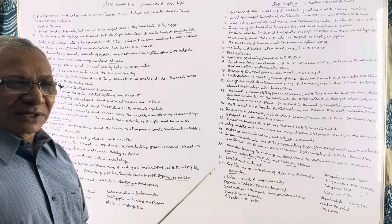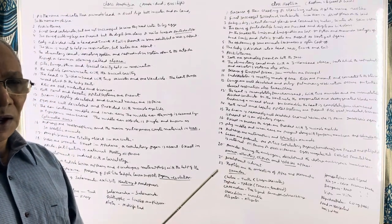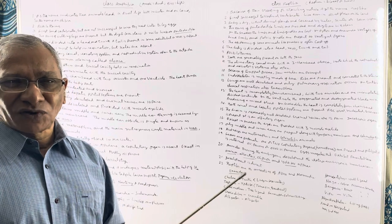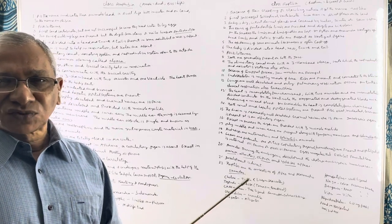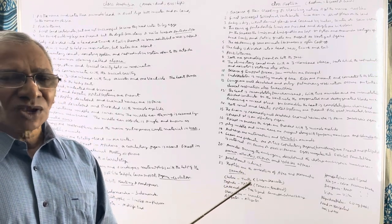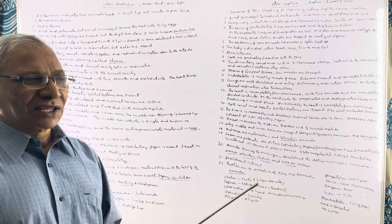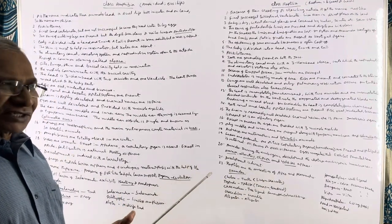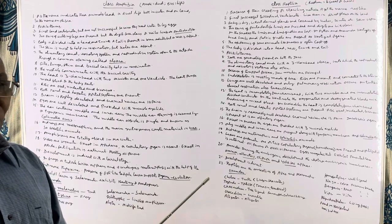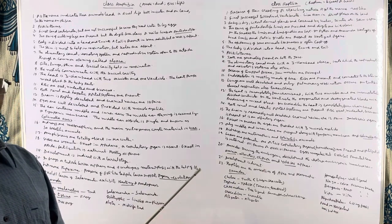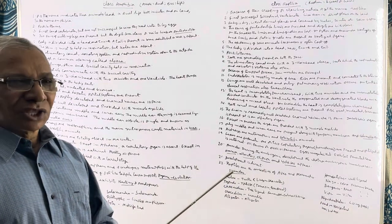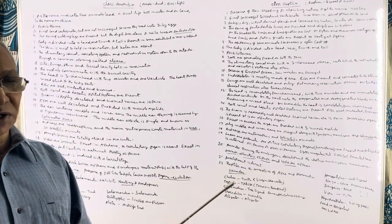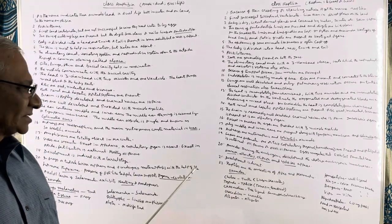The kidneys are metanephric and the nitrogenous waste product is uric acid — this is an adaptation for conservation of water. Because they excrete uric acid, reptiles are called uricotelic animals. Sexes are separate and fertilization is internal. The copulatory organ may be one or two; when there are two copulatory organs they are known as hemipenes.